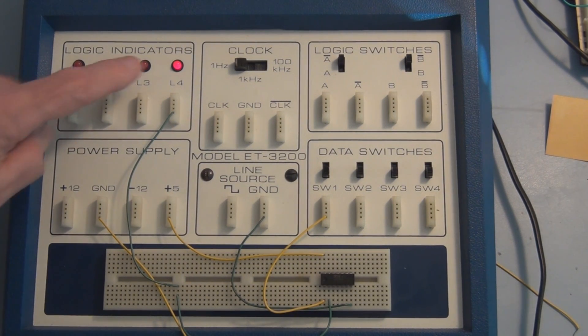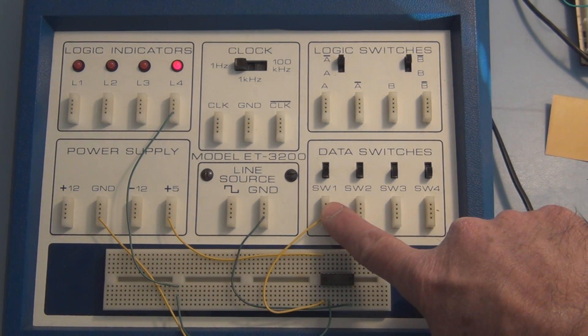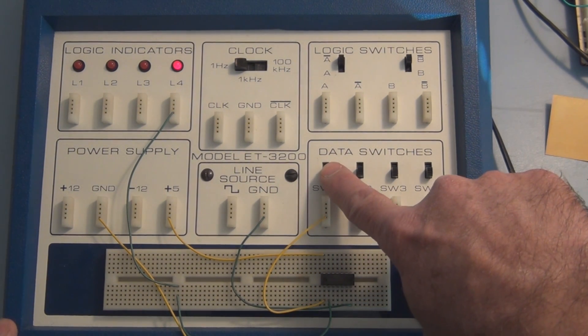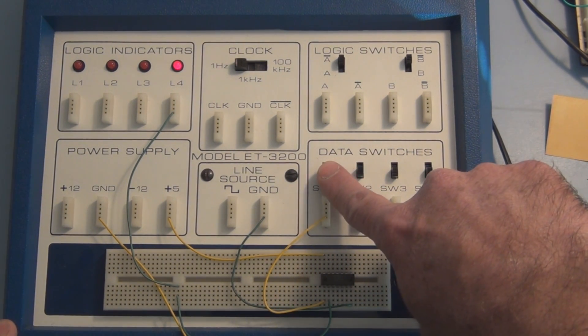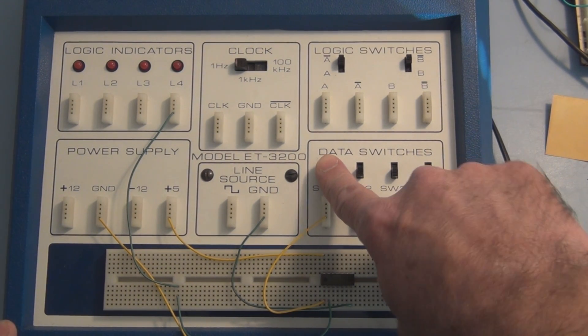So I have it hooked up and you can see it starts off with the LED lit. And that's because I'm starting off with a zero on the input, which produces a one on the output, lighting the LED. So now if we place a logic level one on the input, the LED should go out. And it does.